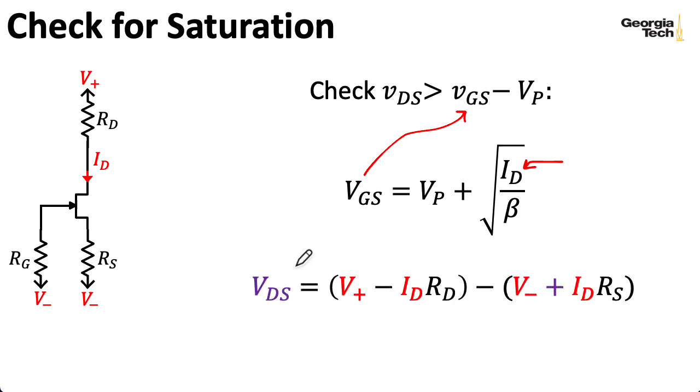For the drain-to-source voltage, the voltage at the drain is going to be V+ minus this voltage lost across RD. And the voltage at the source is going to consist of our V- and the voltage associated with this resistor here, which is ID times RS, according to Ohm's law.